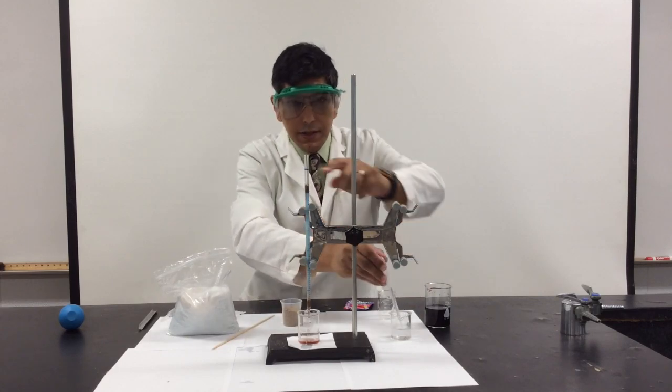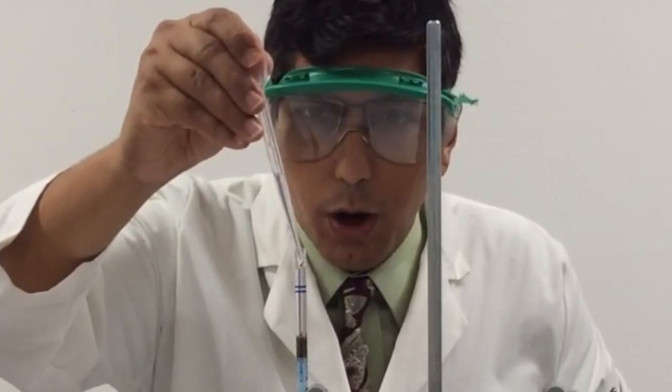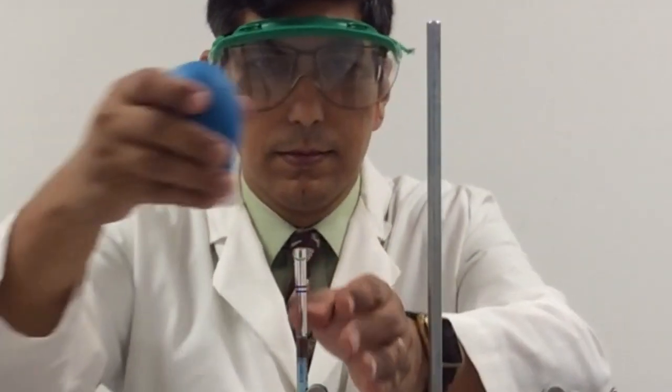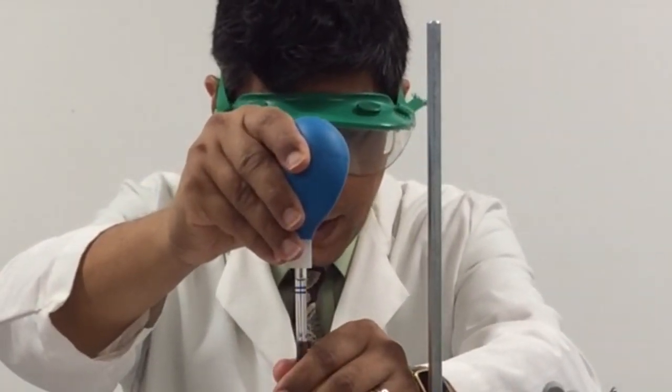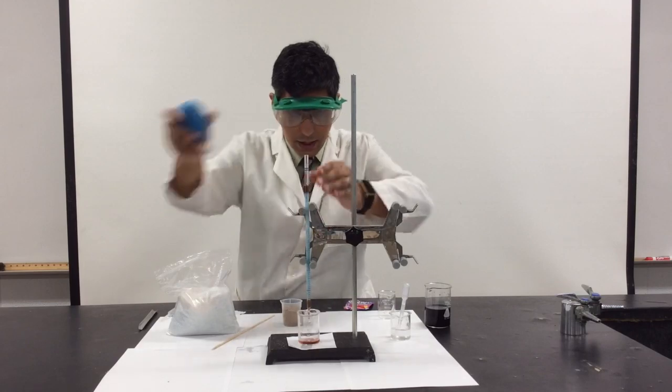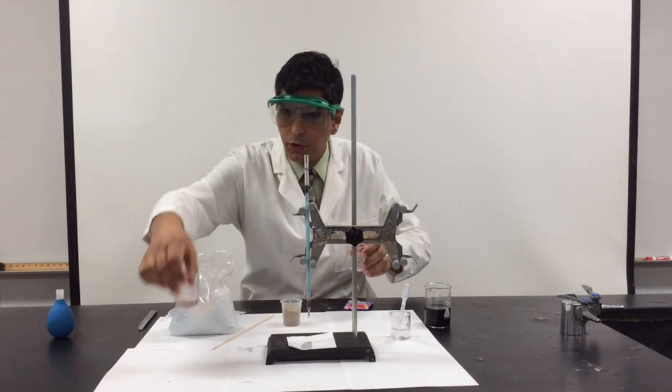Now you don't want the top of the column to dry out, so I'm going to continue adding distilled water to the top of the column. And at this time, it looks like all of the red dye has fallen through. So here we have the red.